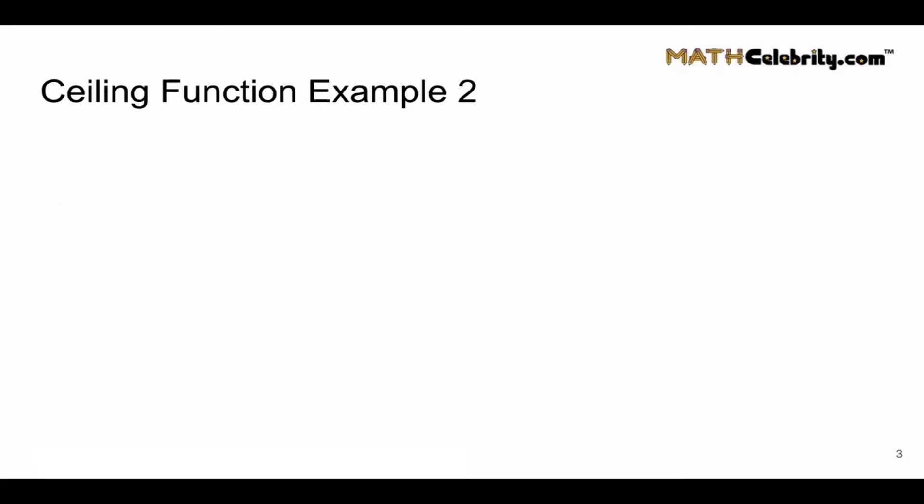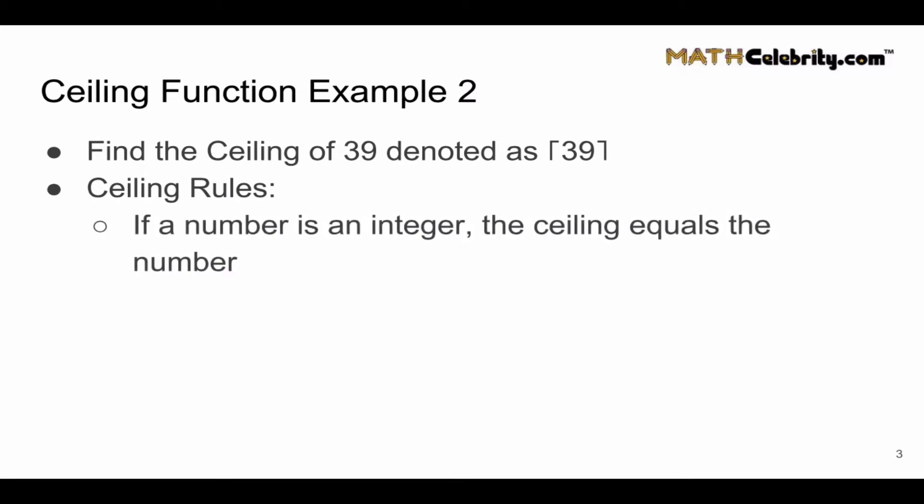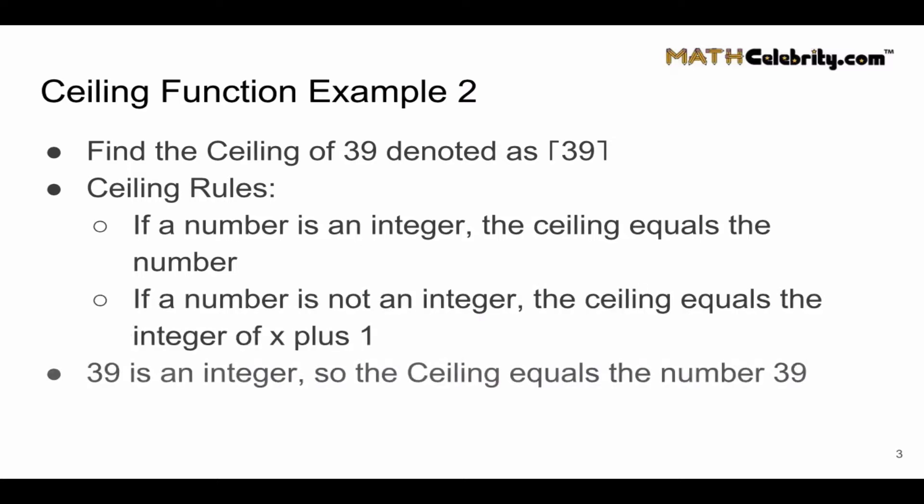Let's walk through another example. I want to find a ceiling of 39. Let's walk through our ceiling rule, two-part check. Is the number an integer? Well, in this case, yes, it is. 39 is an integer. So the ceiling equals 39. There's no change.